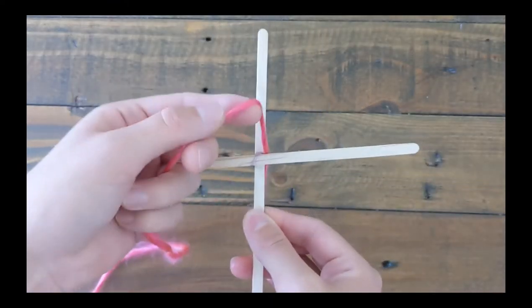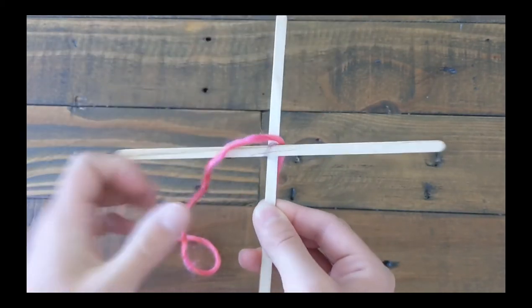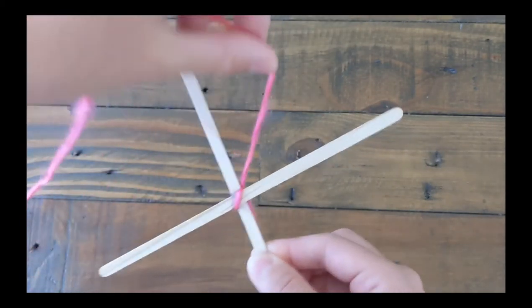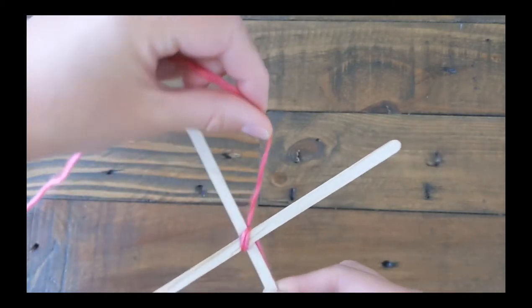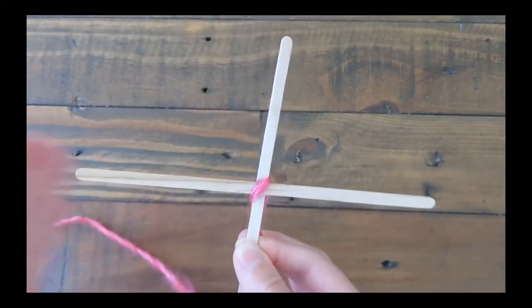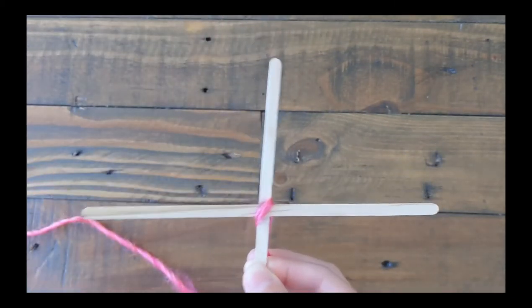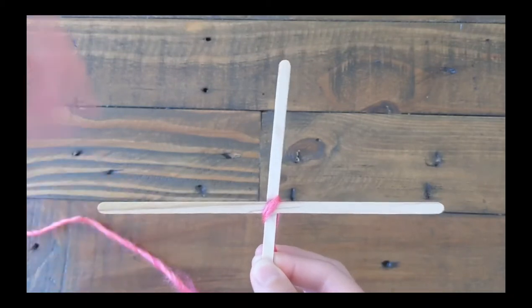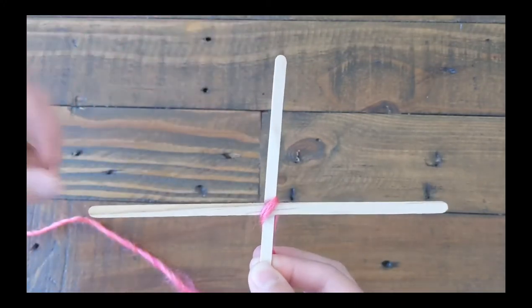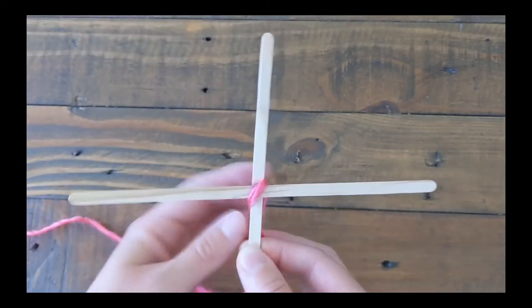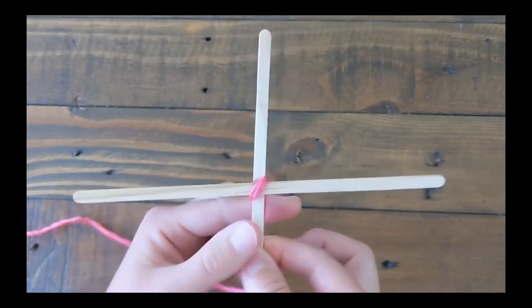So just hold it there. And then you'll want to go three times around this way to begin our X. So one, two, three. And even though the sticks are hot glued together, this just helps make the craft base even more strong.